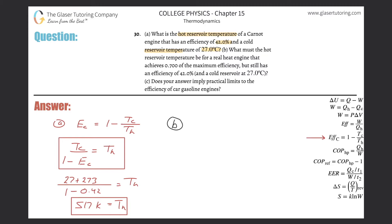And here is letter B now. So it says, what must be the hot reservoir temperature for a real heat engine that achieves 0.7 of the maximum efficiency, but still has an efficiency of 42% and a cold reservoir temperature of 27. So basically the Carnot efficiency is another word for maximum efficiency. So when you see the term maximum efficiency here, that's basically a term that signifies Carnot efficiency, E sub C.